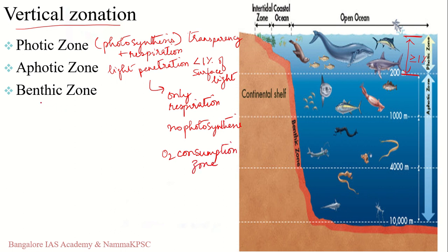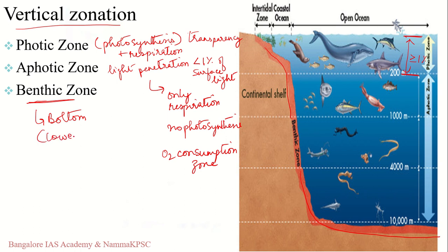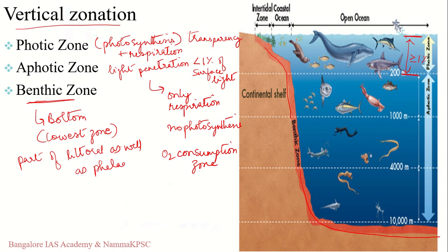The benthic zone refers to the bottom of the water body — such as the lake bed or seabed — and is generally referred to as the lowest zone of a water body. It is a part of both the littoral zone and the pelagic zone, where benthos (organisms found along the benthic zone) reside.